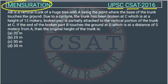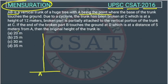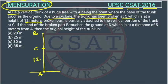AB is a vertical trunk of a huge tree. This is the ground, this point is A, and this is B — that is the trunk of the tree. The cyclone has broken the trunk at point C. AC is given as 12 meters.